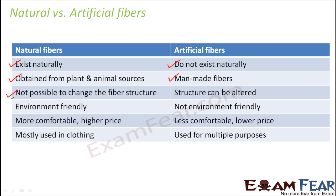Natural fibers cannot have their fiber structure changed because we are not making them. But the structure of artificial fibers can be altered, as it completely depends on us — if we change the process of formation, the structure of the artificial fiber changes too. Natural fibers are environment-friendly, but artificial fibers are not, because during their production process, sometimes poisonous gases are released, causing harm to the environment. One such example of an environmentally harmful fiber is polypropylene.